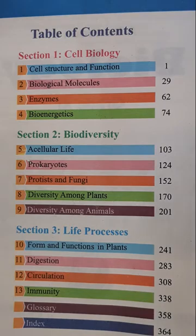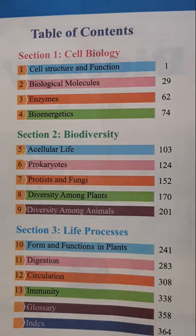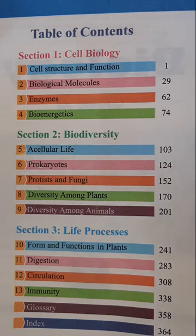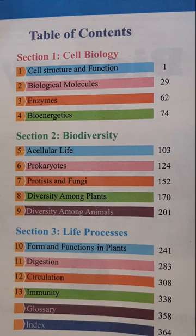In Section 3, we will study life processes or physiological processes. Chapter 10 is related to plants, in which we will study various life processes taking place in plants such as nutrition, gaseous exchange, homeostasis, support, and growth in plants. The last three chapters are related to human biology — covering the human digestive system and digestion, the circulatory system, and finally the immune system and immunity.